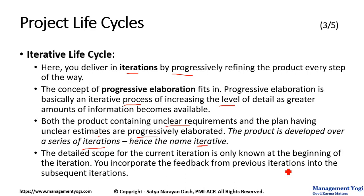The detailed scope for the current iteration is only known at the beginning of the iteration. You incorporate the feedback from previous iterations into the subsequent iterations — this is very significant. You know the scope of the current iteration in detail at the beginning of the iteration, and as you complete one iteration, you go to the next iteration. By that time, more clarity would have come in. Again, for the next iteration, the detailed scope will be known at the beginning of that iteration.